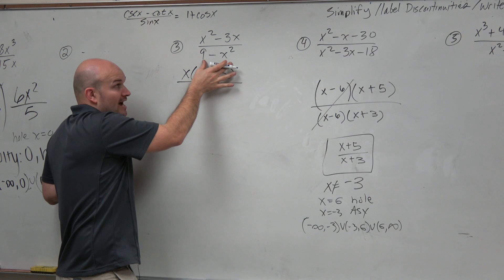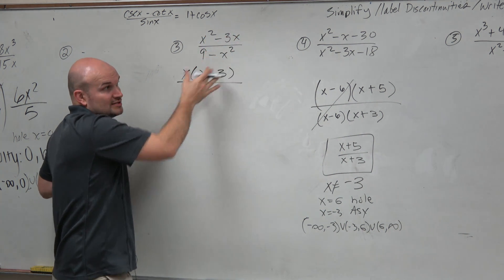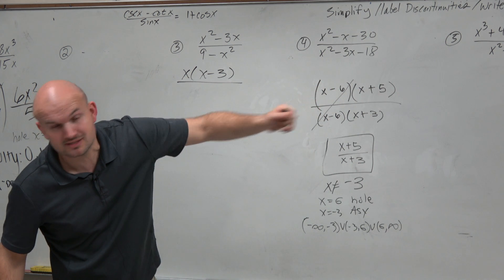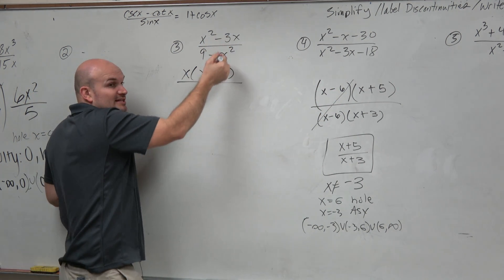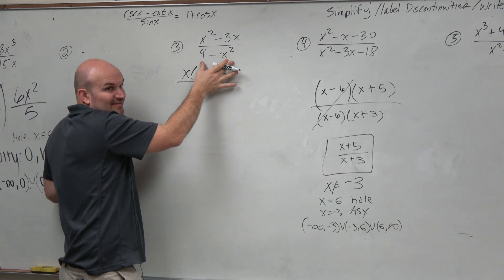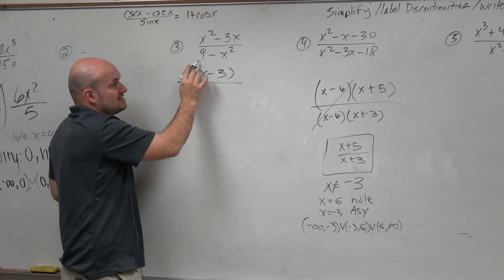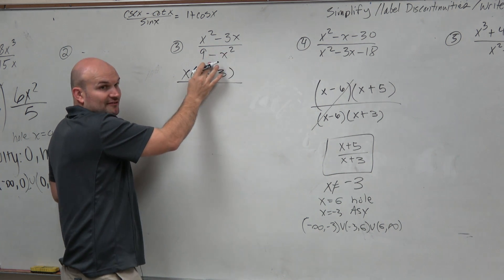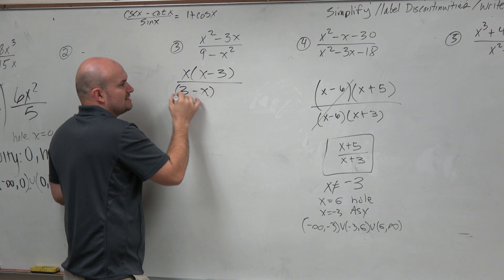Here I see two terms. I automatically think it's either factoring a GCF or difference of two squares. There is a difference of two cubes, but we'll get to that later. Typically, it's usually one of these two methods. Here, they don't have any common factors, so I'm going to look at difference of two squares. Is the first term squared? Yes. Second term squared? Yes. It's a difference? Yes. So I can do difference of two squares.